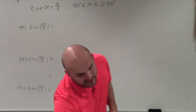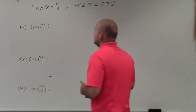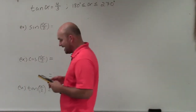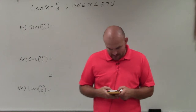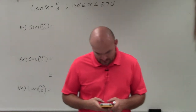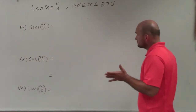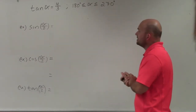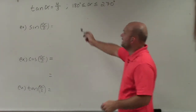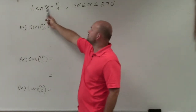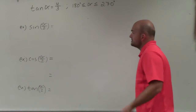Welcome, ladies and gentlemen. What I'd like to do is show you how to evaluate an expression using our half angle formulas. Basically what we have here is we're given an equation: tangent of alpha is equal to 4 thirds.